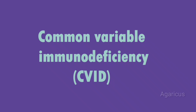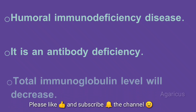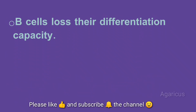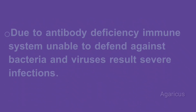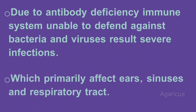Next we are discussing Common Variable Immunodeficiency, in short CVID. It is a humoral immunodeficiency and an antibody deficiency where total immunoglobulin level will decrease. B cells lose their differentiation capacity, with increased suppressor T-cell and diminished helper T-cell activity. Due to antibody deficiency, the immune system is unable to defend against bacteria and viruses, resulting in severe infections.